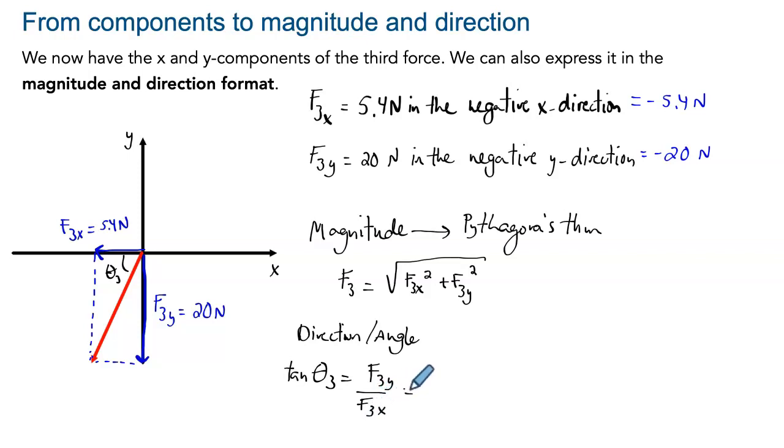And if we do this, we get 74.9 degrees. And now you have to be careful about how you express it. You have multiple possibilities. You could say 74.9 degrees below the negative x-axis. That would be one way.